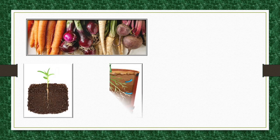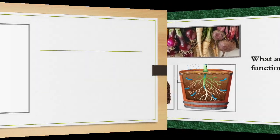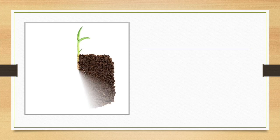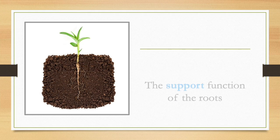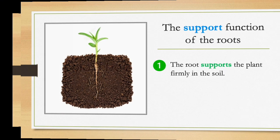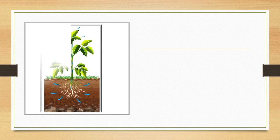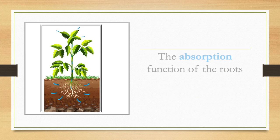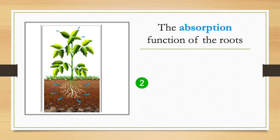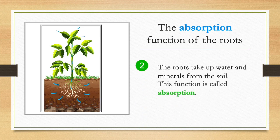What are the various functions of the roots? One, the root supports the plant firmly in the soil. Two, the roots take up water and minerals from the soil; this function is called absorption.